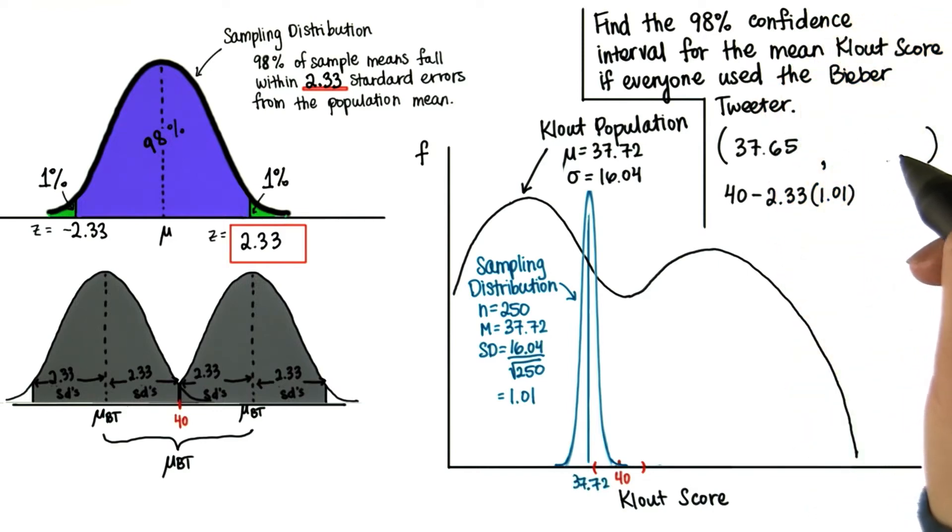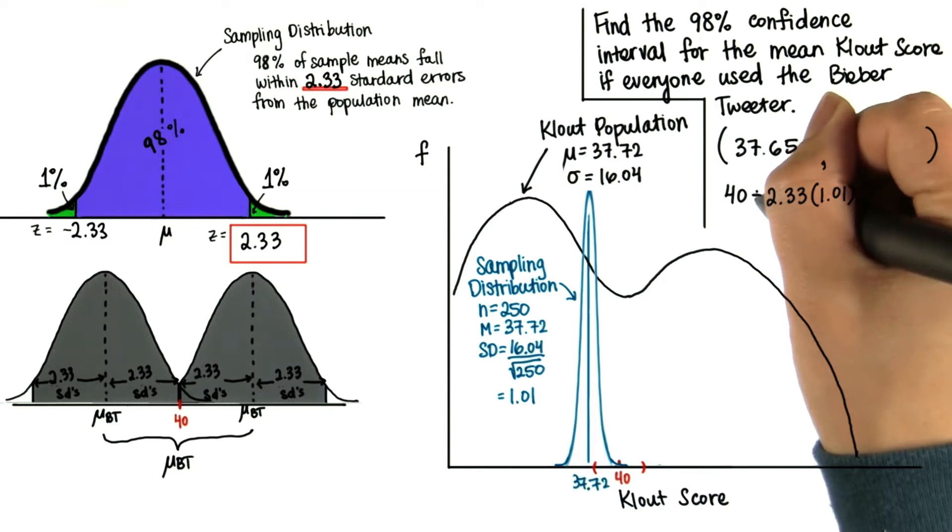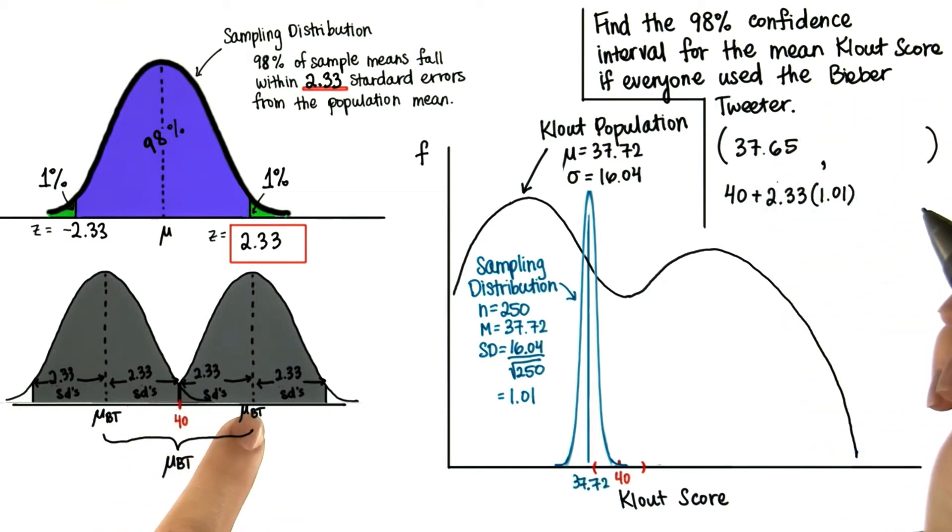And then our upper bound for the 98% confidence interval will be 40 plus 2.33 times 1.01. So this is 42.35 approximately.